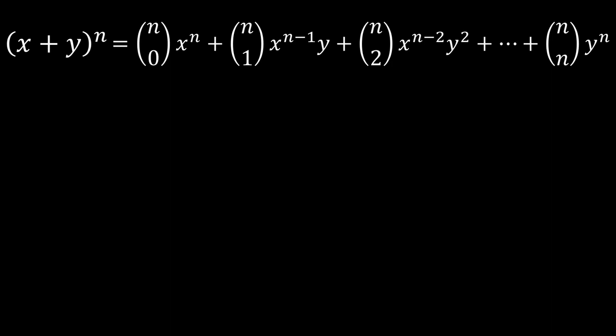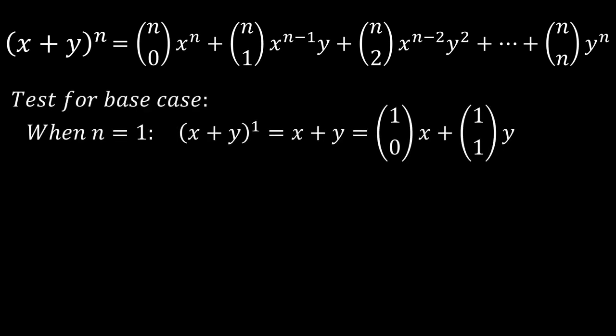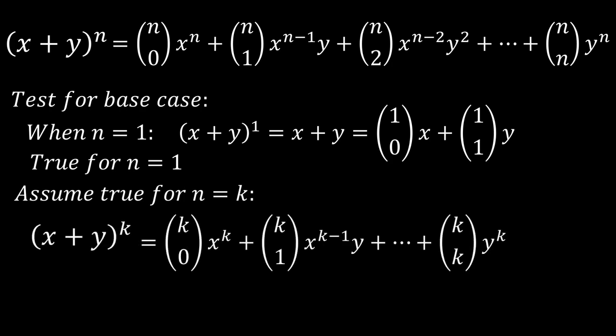We first test for the base case when n equals 1, and x plus y to the power of 1 is just x plus y, but could also be written using combinations. So we know that it is true for n equals 1. Assume that the theorem is true for n equals k, so x plus y to the k is as follows. And now we have to prove that the theorem is also true for k plus 1.